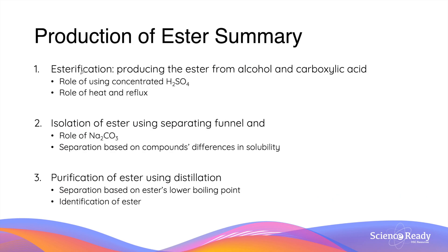In summary, the production of esters consists of three main parts: the actual formation of the ester by reacting an alcohol and carboxylic acid in the presence of concentrated sulfuric acid, heat, and reflux; followed by the isolation of the ester using a separating funnel and sodium carbonate for neutralization; and finally purification using distillation, whereby evaporation and subsequent condensation of the ester increases the purity of the final product. The final product can be identified as an ester by smelling and recognising its aroma or scent.